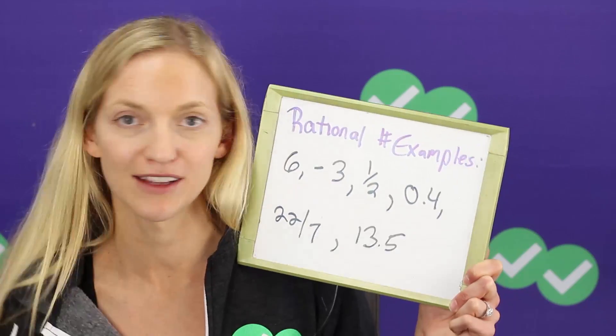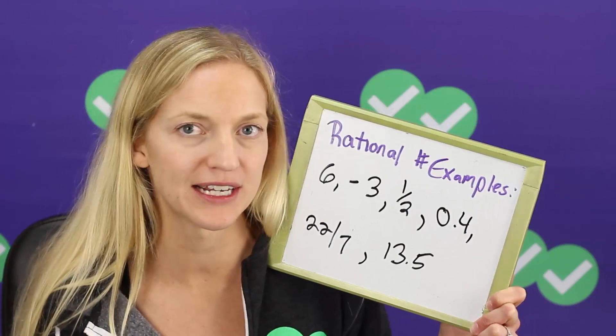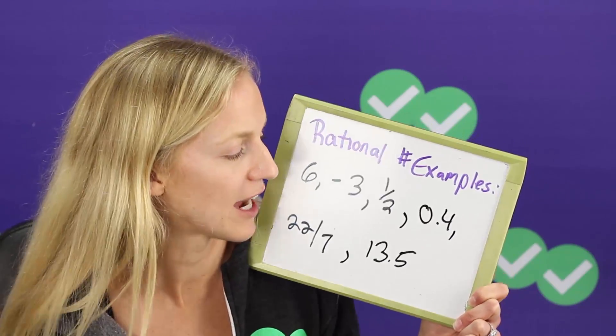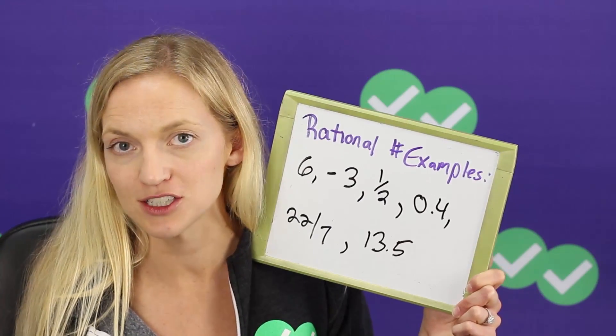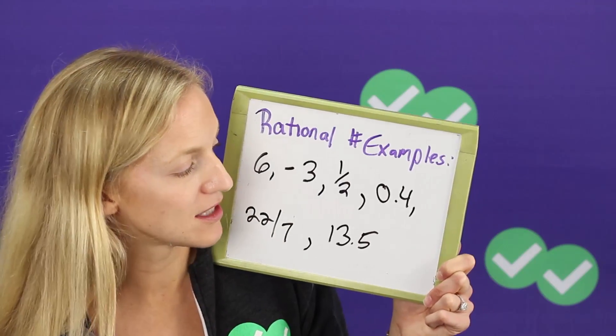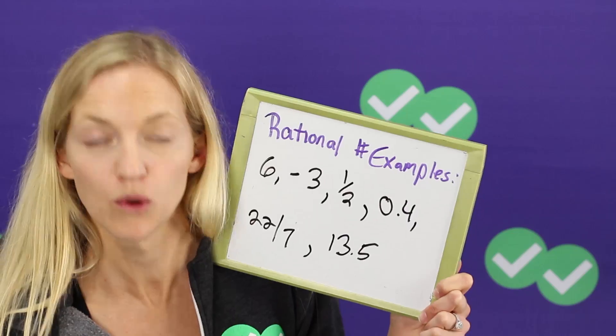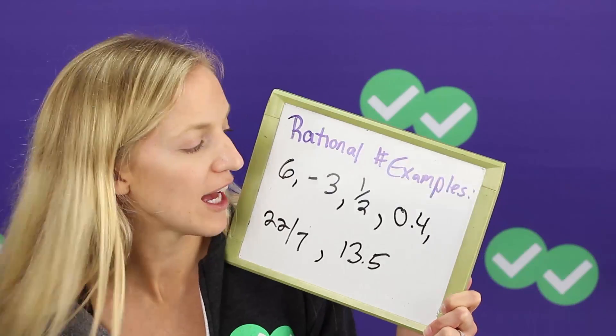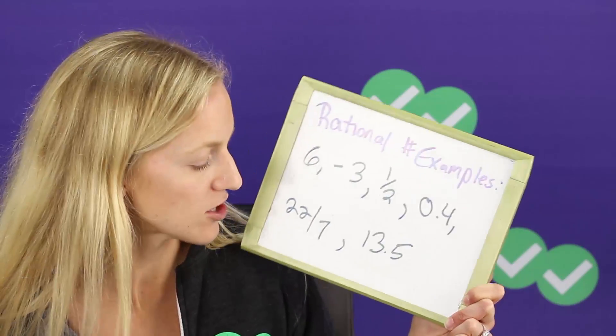Negative three doesn't matter if they're positive or negative when it comes to rational or irrational. One half, that's a fraction obviously. A decimal like 0.4 can be expressed as four tenths or reduced to two over five. So that is also rational.